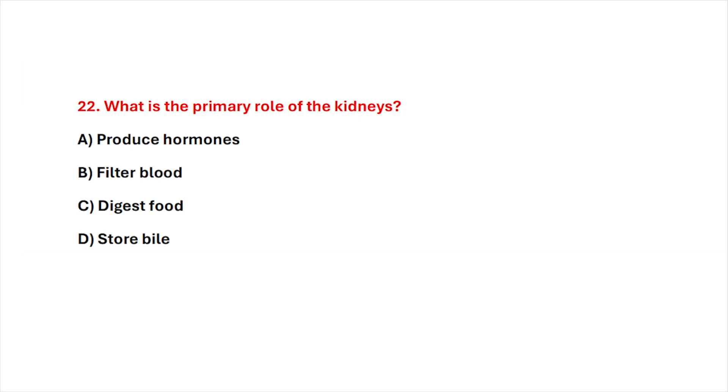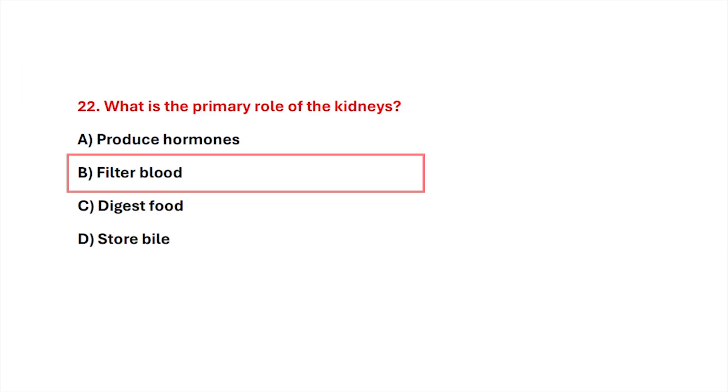Question 22. What is the primary role of the kidneys? Correct answer is option B, filter blood.